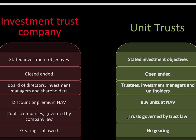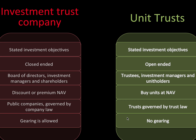We have two types of Collective Investment Schemes, and their names are a little bit confusing because they both have the word trust in them, but they're not really trusts. An investment trust company has stated investment objectives and is close-ended. It has a board of directors, investment managers, and shareholders. You can get a discount or a premium on the net asset value of the shares. It's a public company, governed by company law, and gearing is allowed.